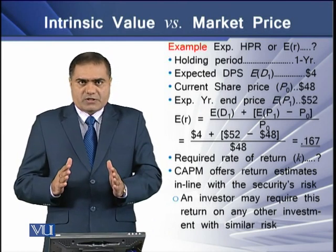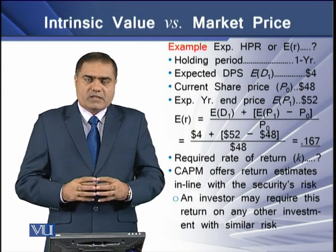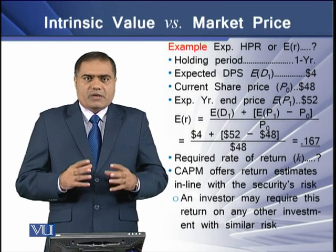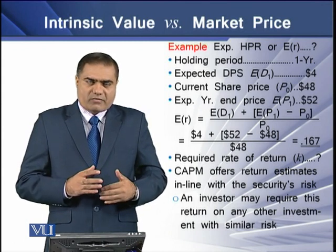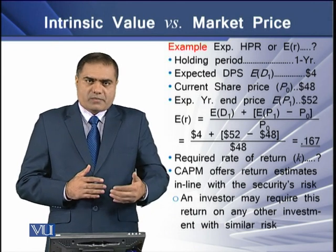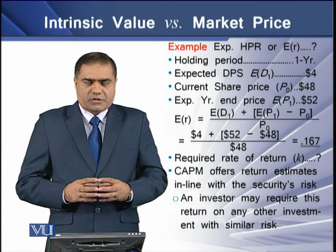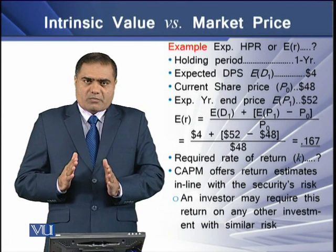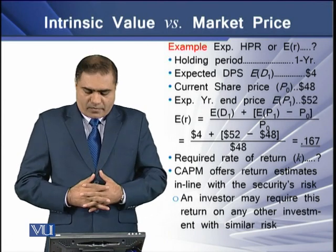Now if 16.7% is the expected return, what is the required rate of return and how can it be determined? The required rate of return is the return that is required by an investor on a security having some risk attached to it. To determine this required rate of return, K, there is a model used — that model is known as CAPM, or the Capital Asset Pricing Model.